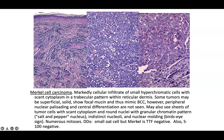The differential diagnosis often includes metastatic lung carcinoma — use TTF1, which is usually negative in Merkel cell and positive in metastatic lung carcinoma. Merkel cell carcinoma is often associated with polyoma virus, and polyoma virus-negative tumors tend to carry a worse prognosis.